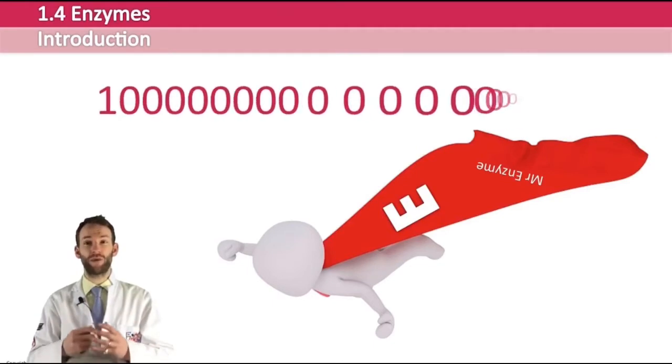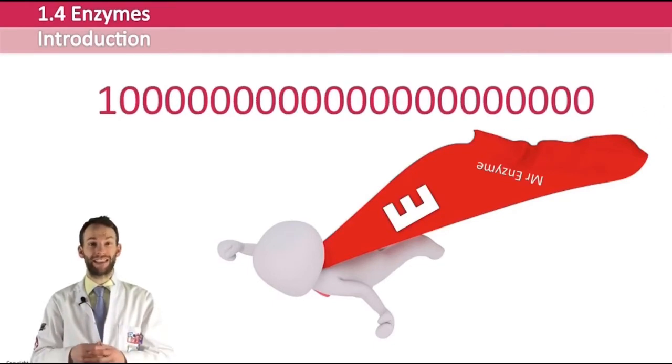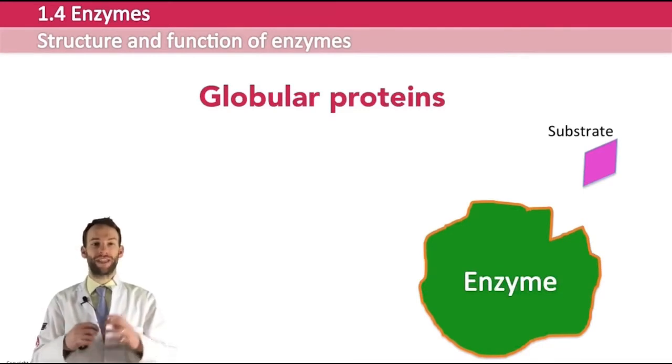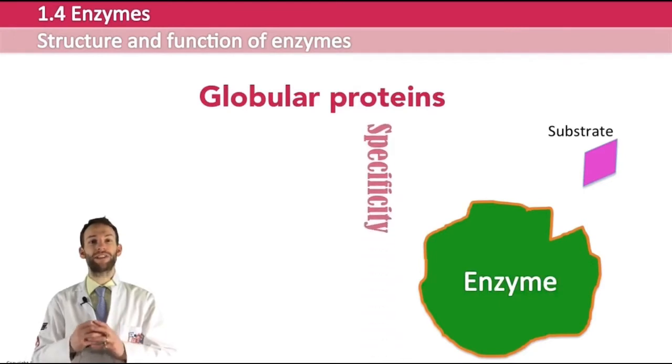Enzymes are globular proteins, and you should know all about protein structure from when you studied it earlier in the course. Most enzyme names end in '-ase'. They have a very specific shape because of the bonding, as explained in protein structure. Because of the primary structure of the protein - the chain of amino acids - the protein will fold up and form a very specific shape. Because of this specific shape and because of an area called the active site in the enzyme, they have what we call a high specificity. This means that they will catalyze usually only one reaction - you need one enzyme for one reaction.